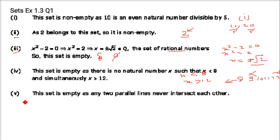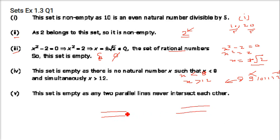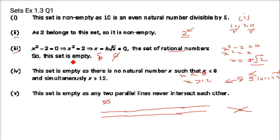Next one is x such that x is a point common to any two parallel lines. You see two lines like railway tracks — they would never meet, they will just go like this. That means they will not have any intersection point, so this set will be an empty set.